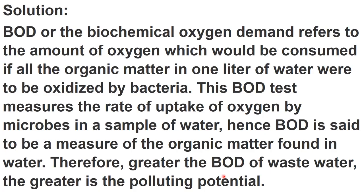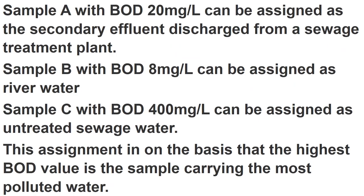Sample A with BOD 20 mg/L can be assigned as the secondary effluent discharged from a sewage treatment plant. Sample B with BOD 8 mg/L can be assigned as river water. Sample C with BOD 400 mg/L can be assigned as untreated sewage water, as it has the highest BOD and is therefore the most polluted. This assignment is based on the principle that the highest BOD value corresponds to the most polluted sample.